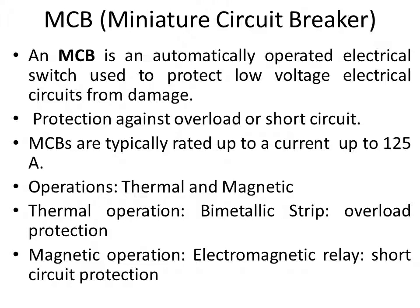Overload protection is provided by the bimetallic strip, and short circuit protection is provided by the electromagnetic relay. In a short circuit, six to seven times the normal current flows through the installation, so instant action is required — which can only be provided by the electromagnetic relay. For overload, the bimetallic strip operates; for short circuit, the electromagnetic relay operates.